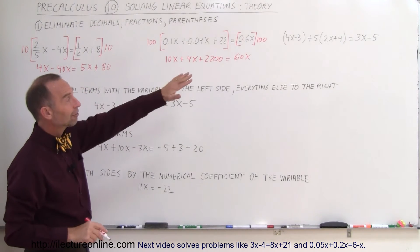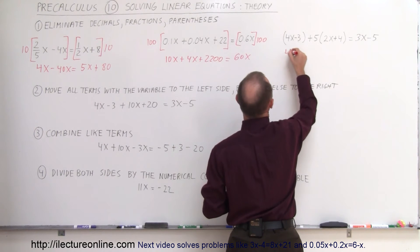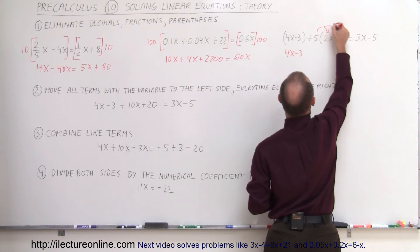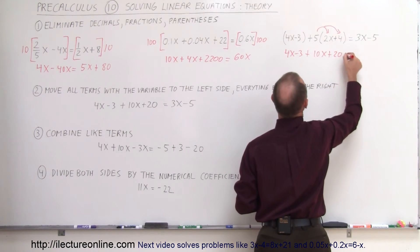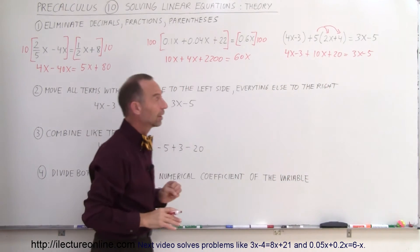And finally, when you have parentheses like that, you want to get rid of those first. In this case, you can see that you don't even need parentheses, 4x minus 3. And here you want to distribute the 5 twice like that, so plus 10x plus 20 equals 3x minus 5. And that's what you want to do first in all cases.